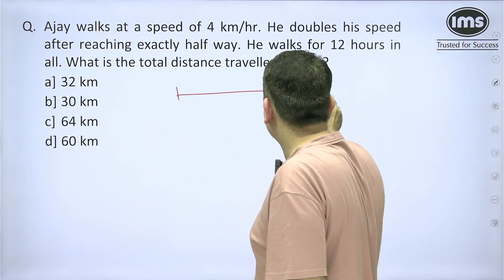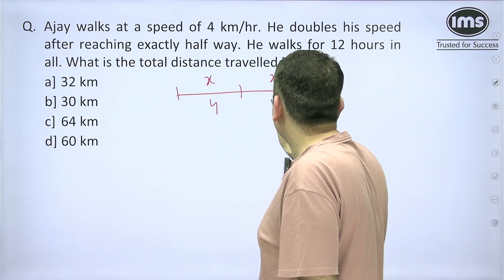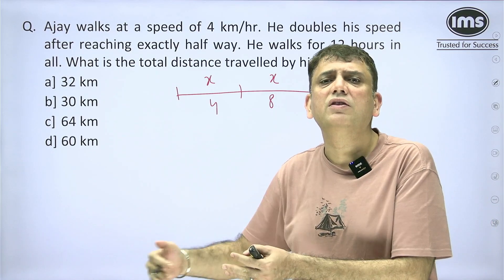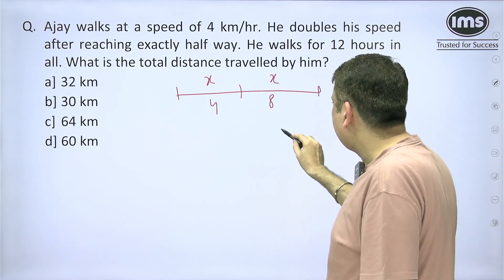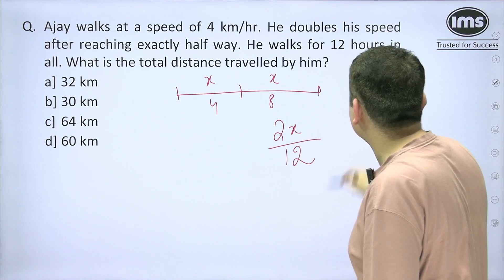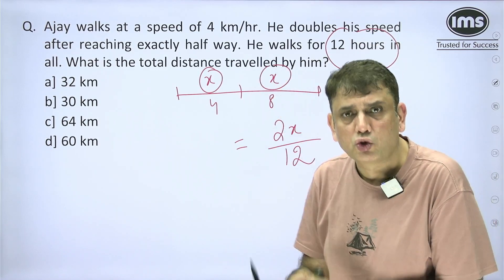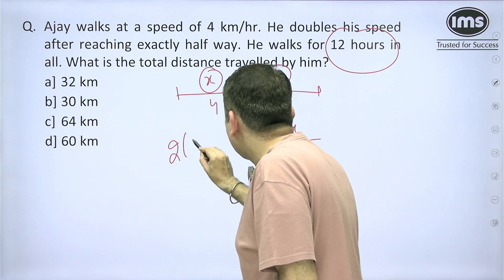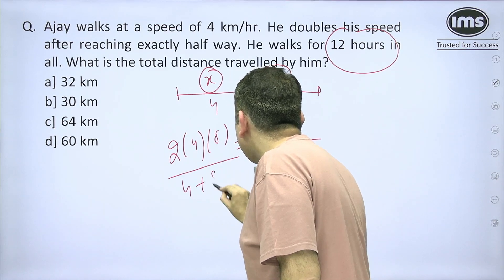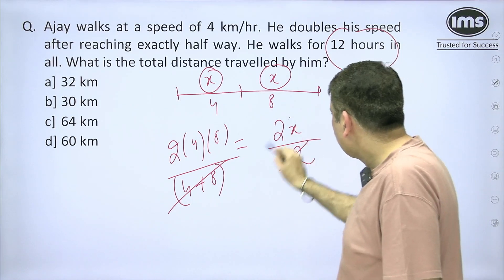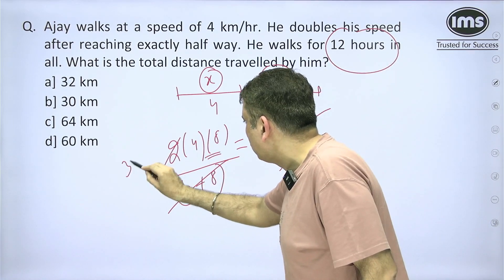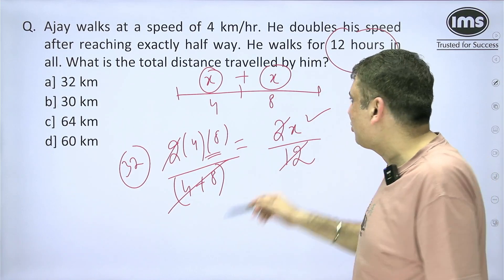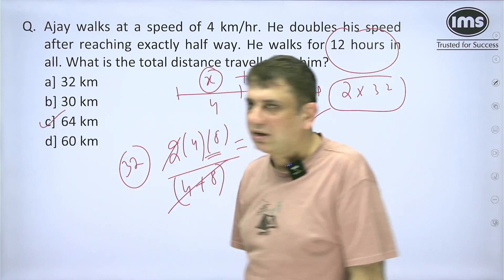Now let's solve the Ajay question using this concept. Ajay walks half the distance at 4 km/h and the remaining half at 8 km/h. Since the distance is equal for both speeds, we use the harmonic mean: average speed = 2·4·8 / (4+8) = 64/12. Setting total distance 2x divided by total time 12 equal to this average speed: the 12 cancels, giving x = 32. Again, be cautious — 32 is the half distance, so total distance = 2×32 = 64 km, which is the correct answer.